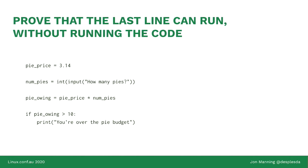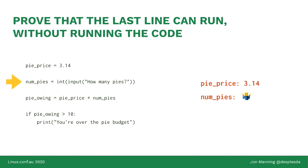Here's a concrete example — a program written in Python. I'd like to prove that the last line, 'print you're over the pi budget', can run under some set of inputs. pi_price is assigned to a variable — under all circumstances its value is 3.14. num_pies is the result of asking 'how many pies' and converting that to an integer, but we don't know that value, so we create a symbolic value and call it 'pi'. pi_owing is pi_price times num_pies — we can't know its concrete value either because one operand is symbolic, so pi_owing is pi times 3.14.